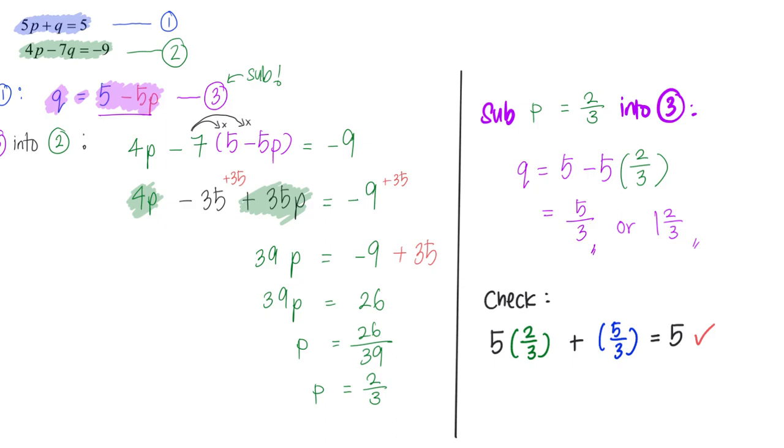Check again for equation 2: 4 times P - P is 2 over 3 - minus 7Q. When I press my calculator, does this give me negative 9? Yes it does, so our answers are correct.